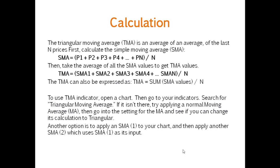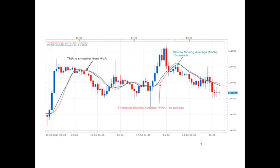To use the TMA indicator, open a chart and go to the indicators section and search for the Triangular Moving Average. If it is not found, try applying the normal Moving Average (MA), then go into the settings of the MA and see if you can change its calculation to triangular. Another option is to apply an SMA, then apply a second SMA which uses the first SMA as its input.